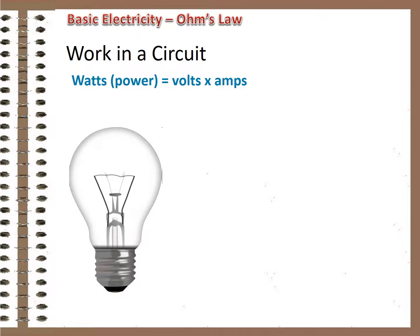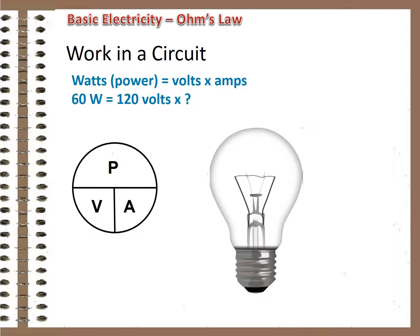The idea that multiplying volts times amps gives you the power consumption of the circuit is a useful tool, because with an equation like that, it's possible to determine any one value if you know the other two. Here's an example: if a 60 watt light bulb is wired into a 120 volt circuit, we can determine the current flow through the bulb. What would you have to multiply 120 by to get 60? Of course, one half. So a 60 watt light bulb in a 120 volt circuit draws one half amp of current.